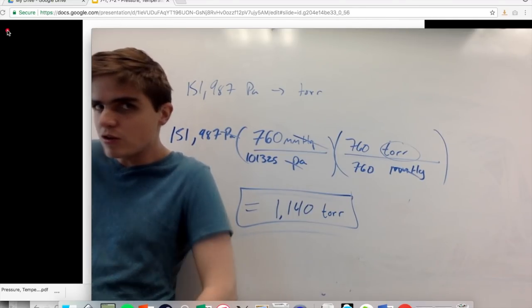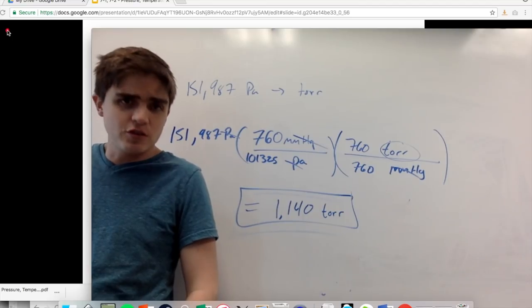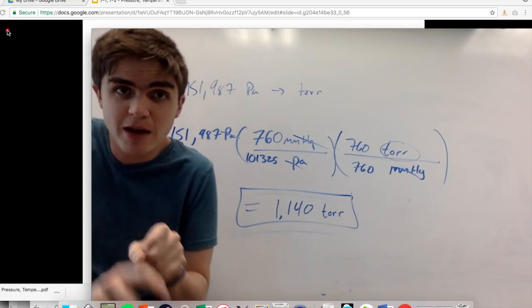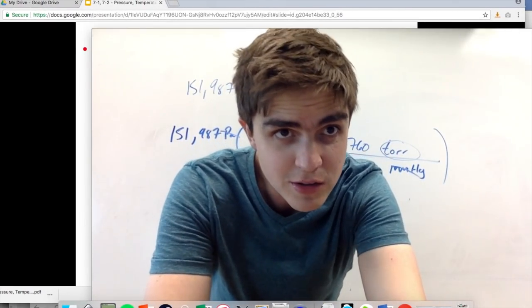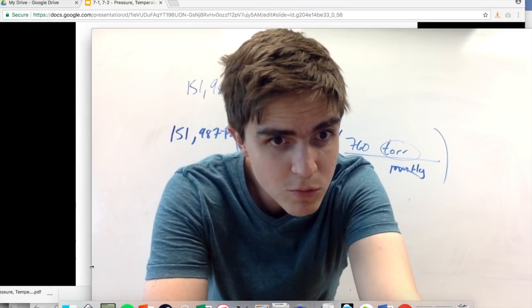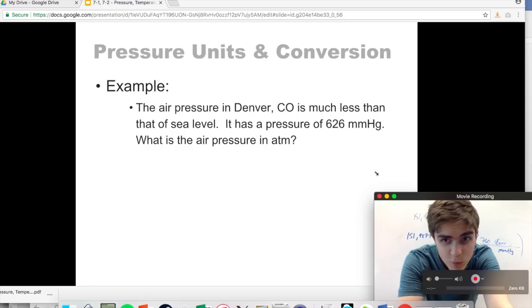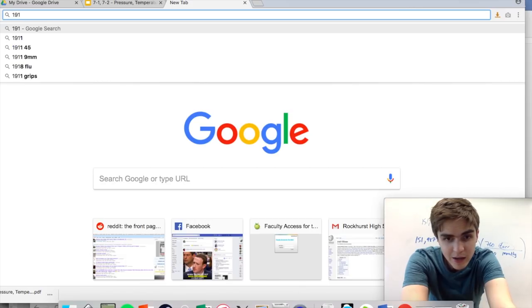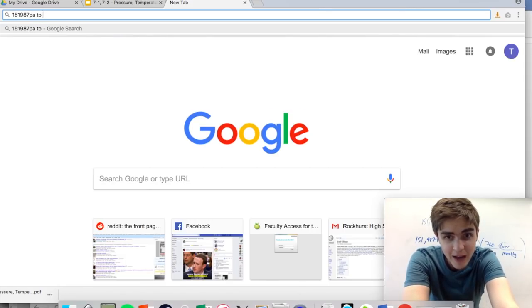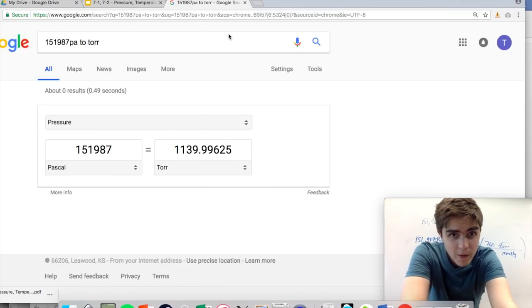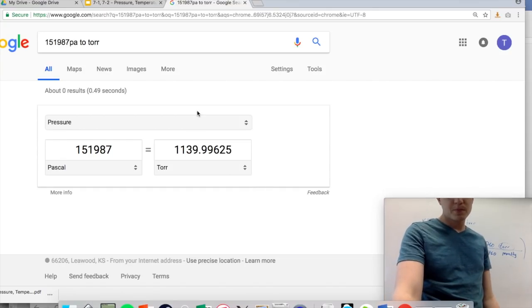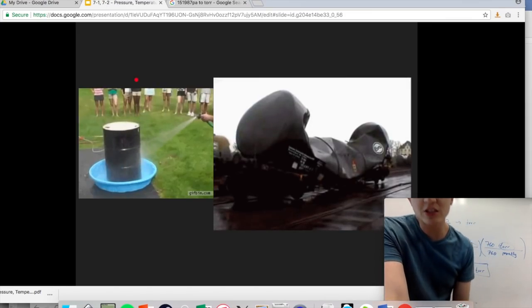Once you get the hang of it, how do you know if you're doing it right? Well, that's where the Google conversion factors come in turn. You can quickly Google this and check. 151987 Pascal to tors. And here we go, 1139.9. And we got 1140. Hey, look at that. We're as good as Google, but able to do it ourselves.